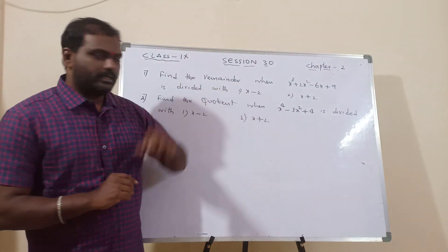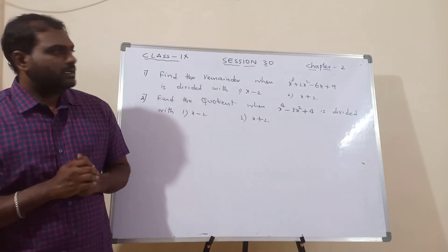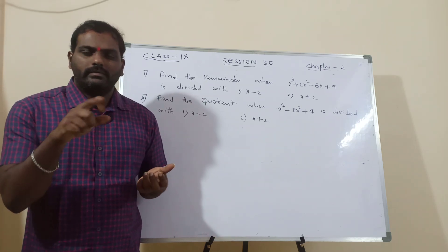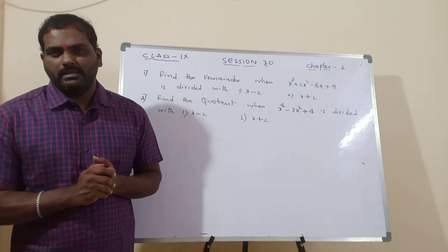Because, because only the remainder. So, we have to use remainder theorem. When a polynomial is going to divide with x plus 8, then what we have to find out? We have to find out p of minus 8. Okay.